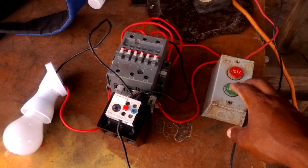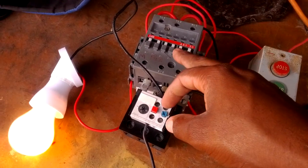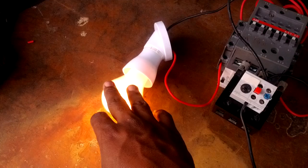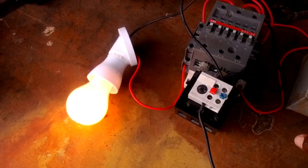I'm pressing my start button here. As you see, my coil is slammed in and my light is on. Don't worry about the light, it's a 220 light on a 110 volt circuit.